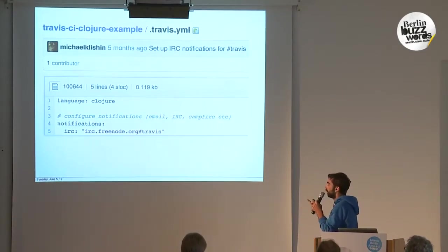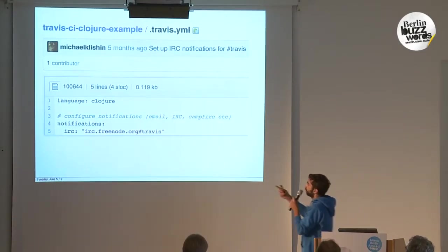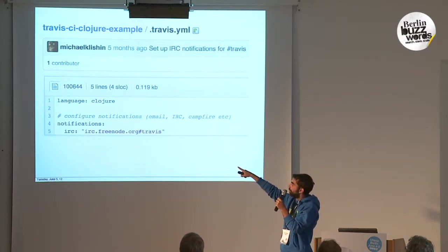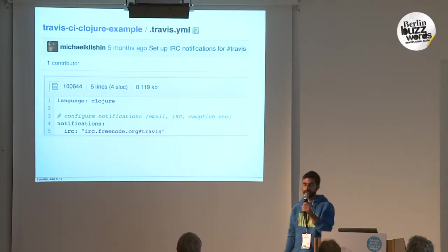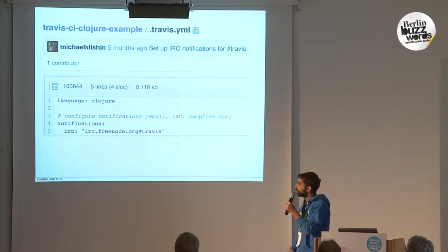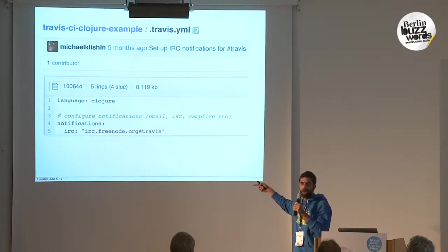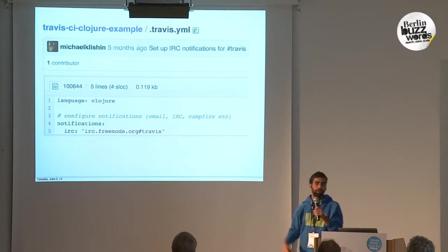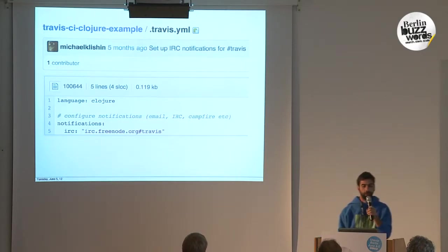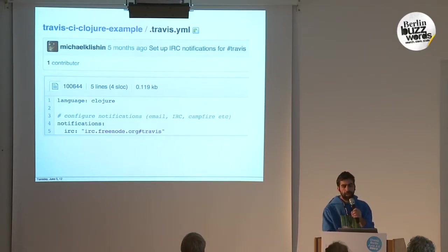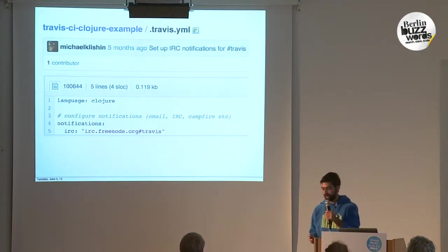Here's an example — all you have to do is add a file .travis.yml, you specify the language you want to test against. In this case, we test against Clojure. And then, for example, you say you want to notify an IRC channel, you can notify an email or whatever. That's all you need to do, and then it does whatever is standard for a Clojure project to run the tests.